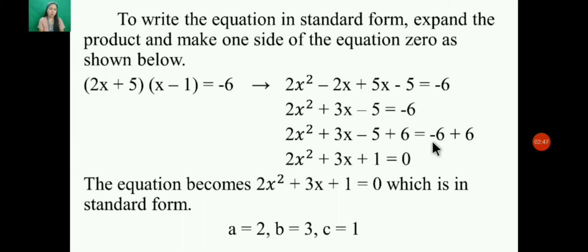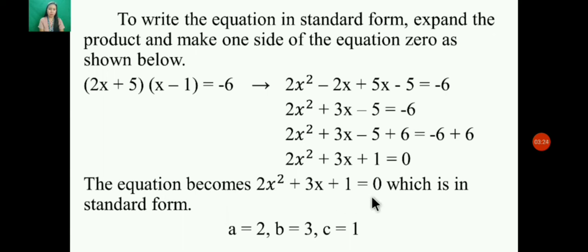Combining the constants: -5 + 6 = positive 1, because 6 is the highest and its sign is positive. The equation becomes 2x² + 3x + 1 = 0, which is in standard form. Our values are a = 2, b = positive 3, and c = positive 1.